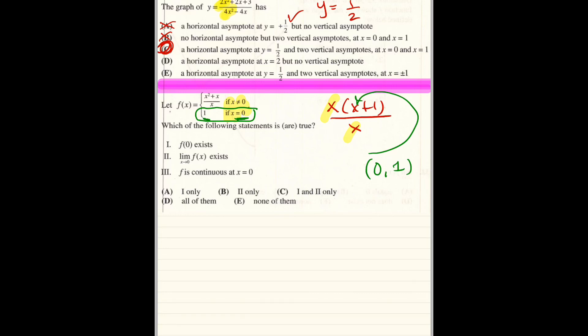Guys, once it's continuous, the limit must exist. It goes without saying. So f of 0 exists, limit exists, it's continuous. Which of the following are true? All three of them. I hope you guys enjoyed this video. Come back for the next one.